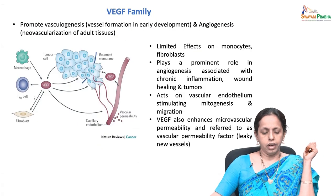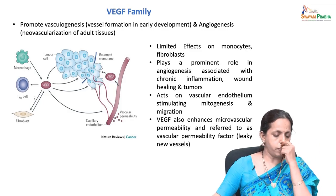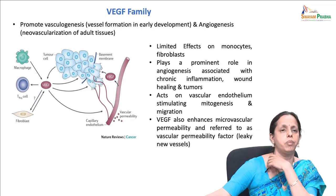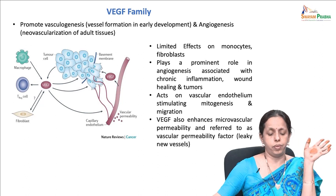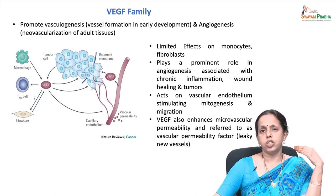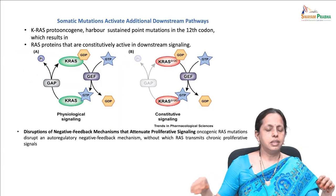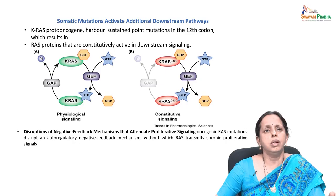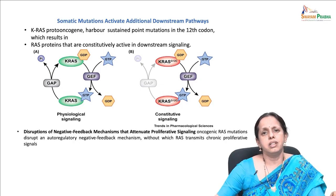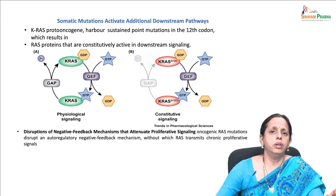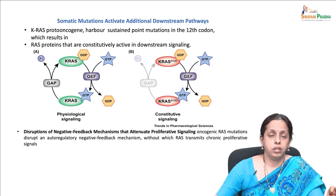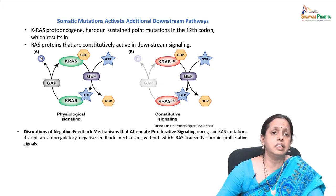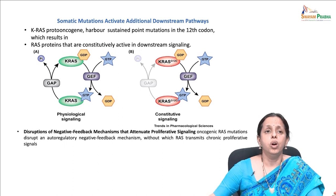Somatic mutations activate additional downstream pathways. Here we will see how somatic mutations activate additional downstream pathways. As we have discussed in detail, the KRAS proto-oncogene has sustained point mutations in the twelfth codon which result in KRAS proteins that are constitutively active in downstream signaling — there is no off mechanism.